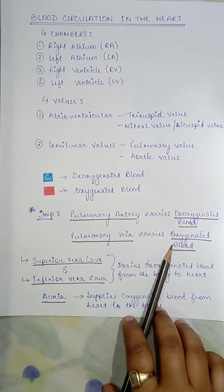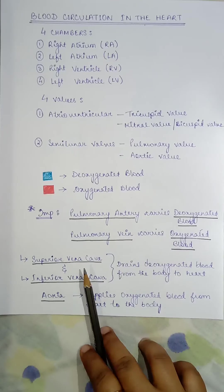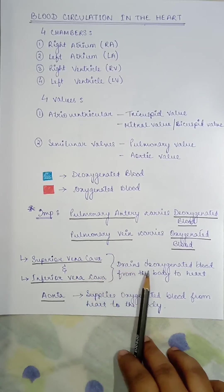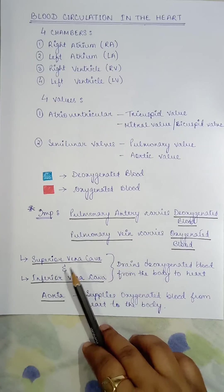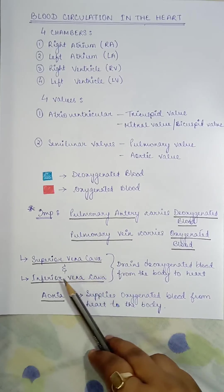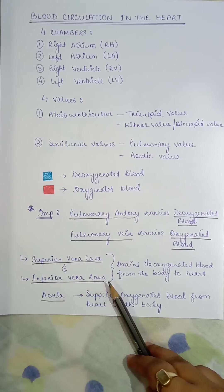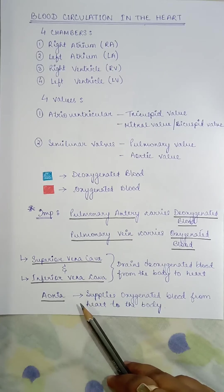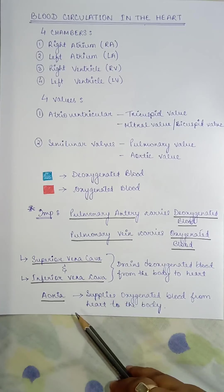There are two vena cavae: the superior vena cava and the inferior vena cava. The superior vena cava drains deoxygenated blood from the upper part of the body to the heart, while the inferior vena cava drains deoxygenated blood from the lower part of the body to the heart. The aorta is a very large artery that supplies oxygenated blood from the heart to the body.